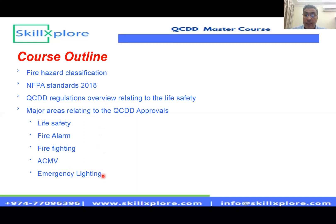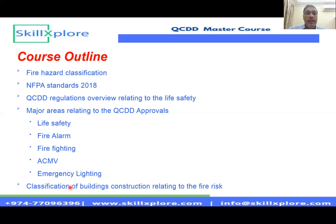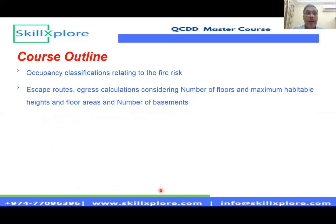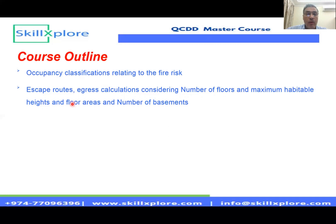Emergency lighting, as it is part of the life safety system. To apply all of these systems, we should understand the classification of buildings under construction and what the fire risk is related to. The occupancy classification for the nature of the building and its rating. Most important for civil defense — we'll talk about the escape route, the exit layout, and the egress calculation. Calculations here are mainly related to the architect, not mechanical, but we have to understand how they are calculated and what is considered. What is the number of exit routes and exit doors? What are the maximum habitable floors and height requirements?